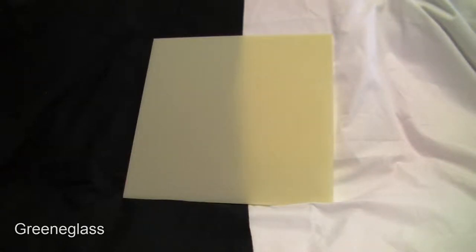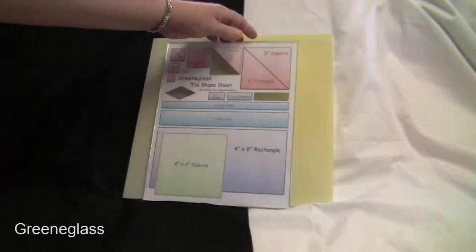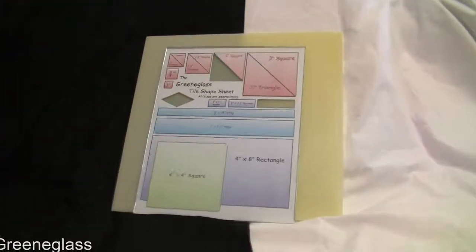Now you see it on both a black and a white background to give you an idea what it would look like, and here is our tile shape sheet with a couple three pieces cut out.